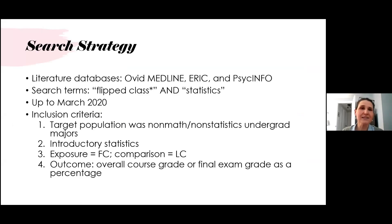Our initial inclusion criteria required a target population of non-mathematics and non-statistics undergraduate majors of any age, and the class had to be introductory stats — not any other stats or research methods course. The article had to compare the flipped class to the lecture class, and the outcome must have been a numerical final course grade or final exam grade, either as a percentage or convertible to a percentage.